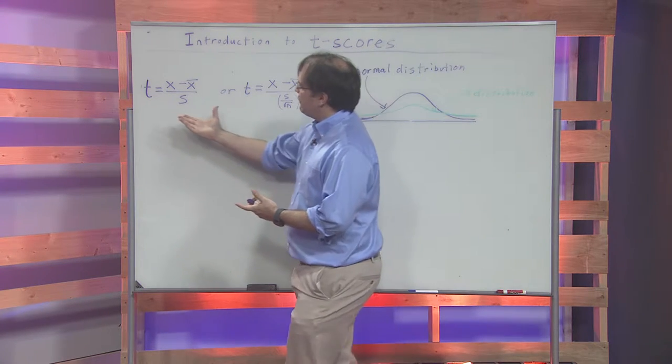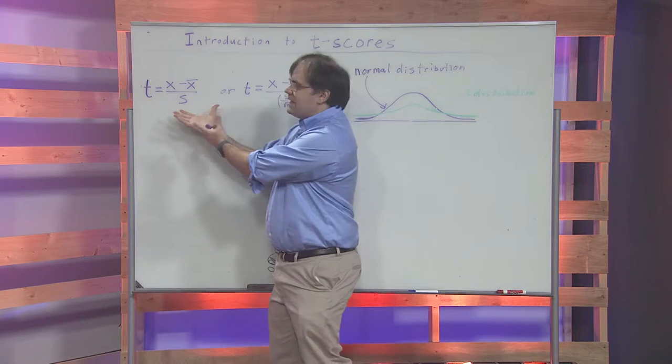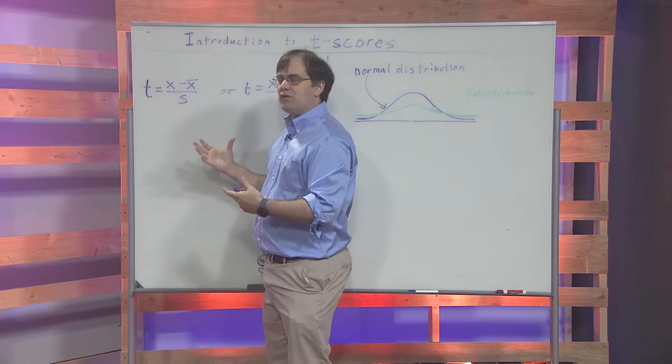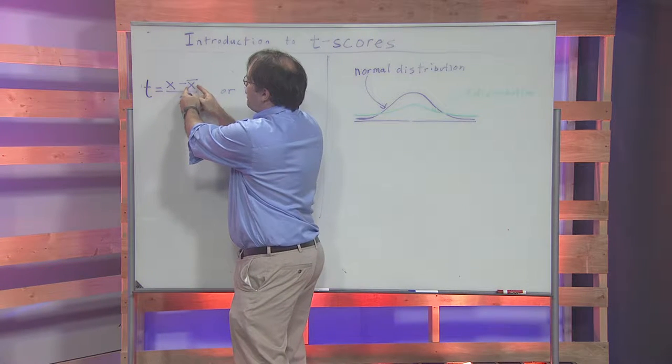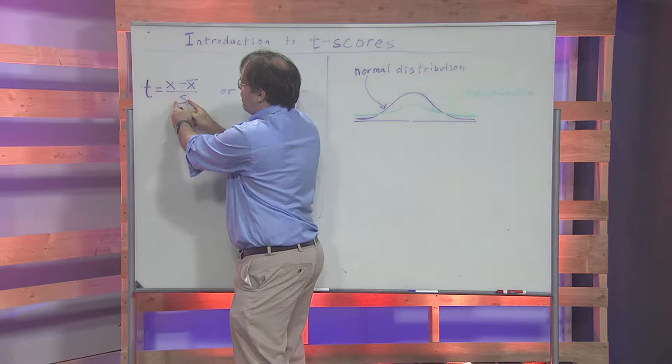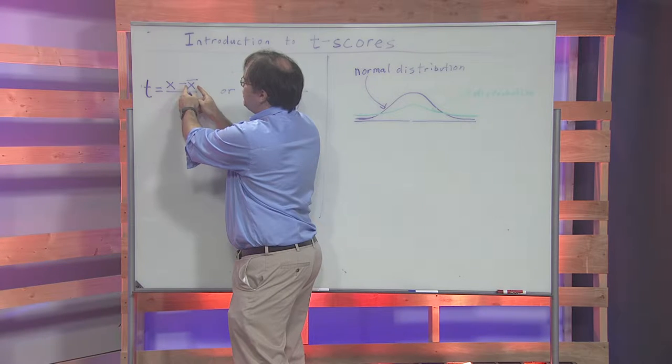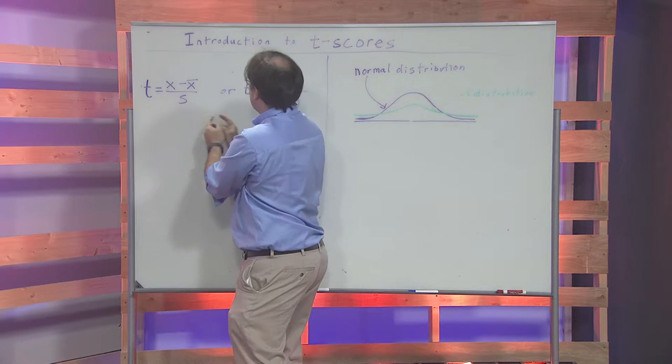If you look at these formulas that I have here, these formulas look like the formulas that you see for a z-score, except if you notice, instead of having the population mean and the population standard deviation, we have a sample mean and a sample standard deviation.